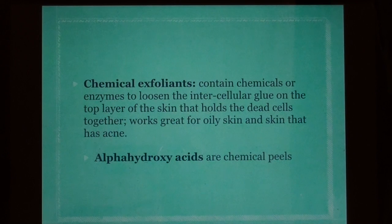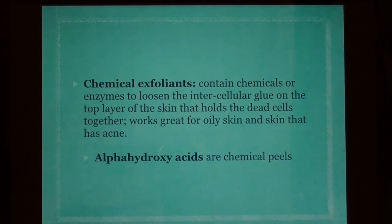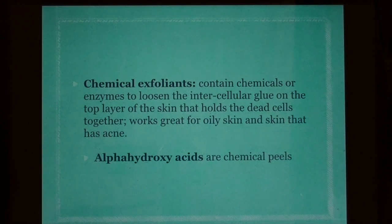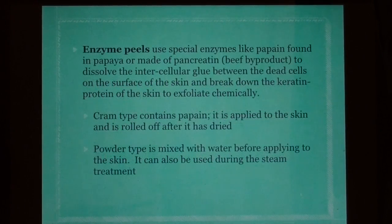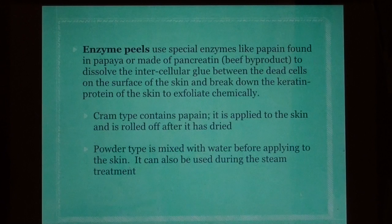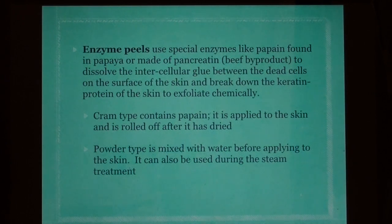Chemical exfoliants contain chemicals or enzymes to loosen the intercellular glue on the top layer of the skin that holds dead cells together. They work great for oily skin and skin with acne. Alpha hydroxy acids are chemical peels. Enzyme peels are special enzymes — like papain found in papaya, or pancreatin, a beef byproduct — used to dissolve the intercellular glue between dead cells on the skin surface.